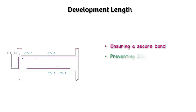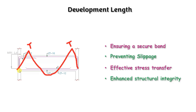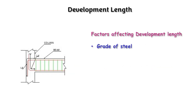Development length helps to ensure a secure bond between the concrete and the steel reinforcement. It also helps to prevent the bar from slippage and enables effective stress transfer, enhancing structural integrity. In this image, the development length is provided for the bar. For a beam, the bending moment creates tension at the top, meaning the top bar is stressed and pulled out. If we don't provide the proper development length, the bar will slip out from the concrete.